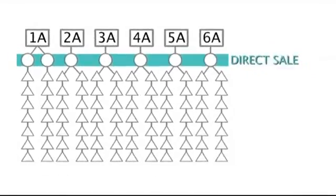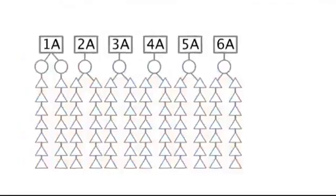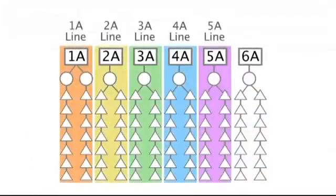Below each rank on your chart is a vertical line, which represents direct sales and indirect sales completed while in that particular rank. Each line is referred as 1A line, 2A line, and so on.